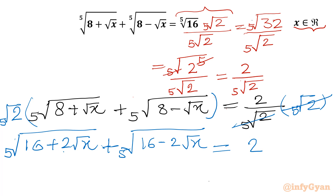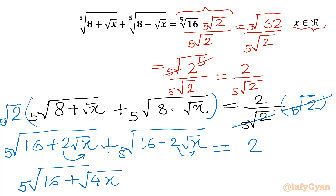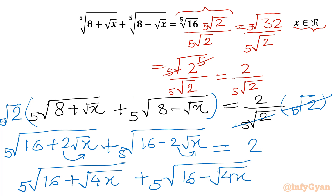I can take the 2 inside the square root as well. So I can write this equation as 5th root of (16 plus square root 4x) plus 5th root of (16 minus square root 4x) equal to 2.